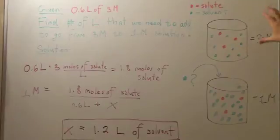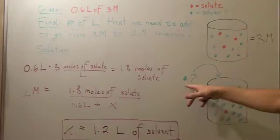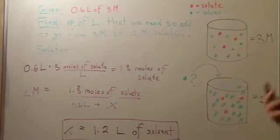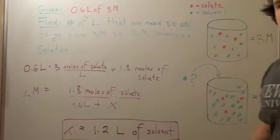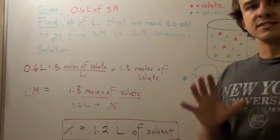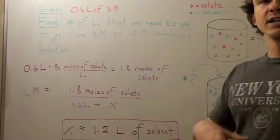We want to go from a 3 molar to a 1 molar solution. So we need to ask ourselves, how many more blue dots do we need to add to go from 3 molar to 1 molar? Since the number of red dots stays the same, we need to find the constant.